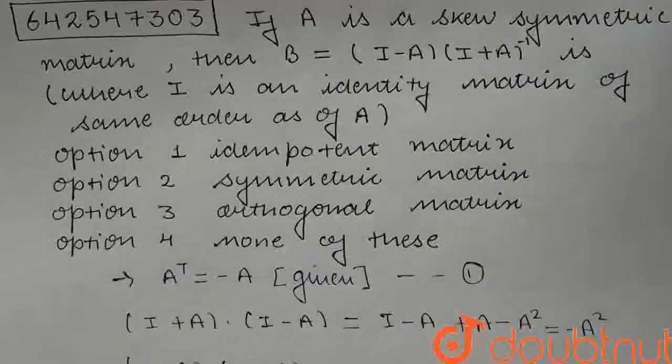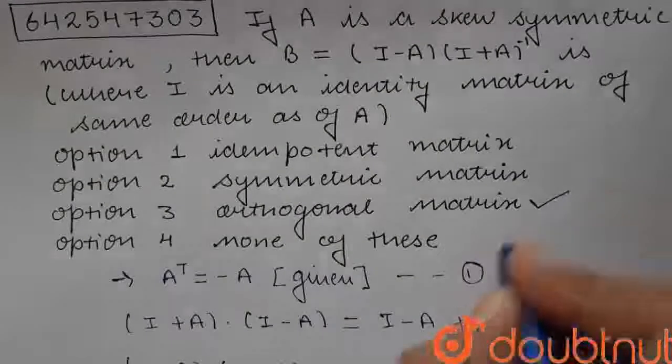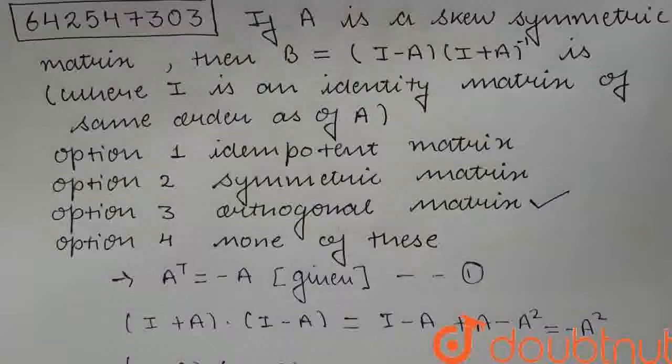Since B into B transpose equals I, this property is satisfied only by an orthogonal matrix. So the third option, orthogonal matrix, is the correct answer. Thank you.